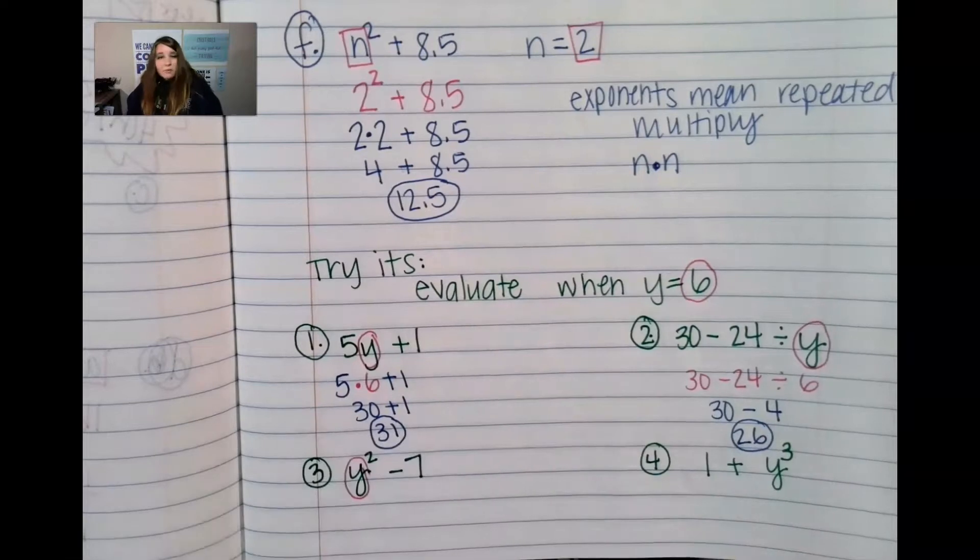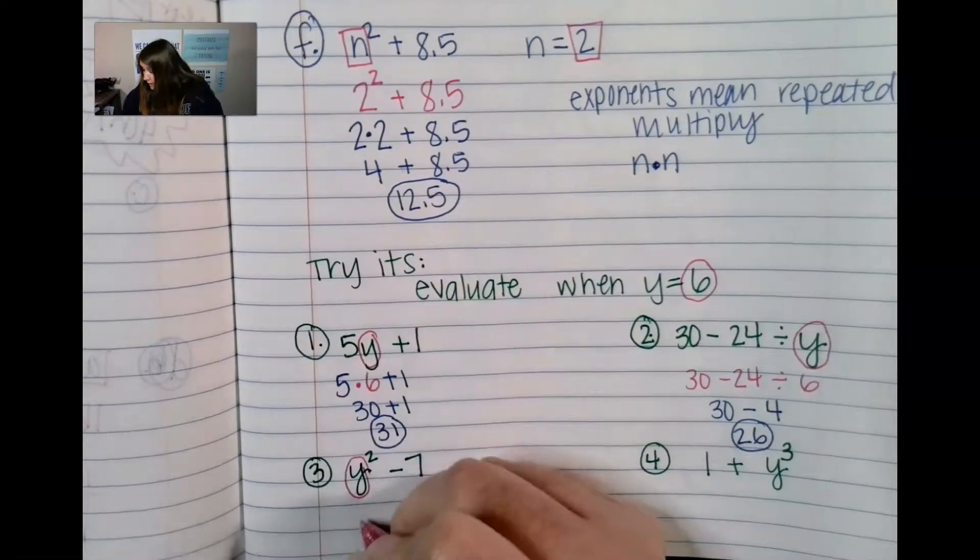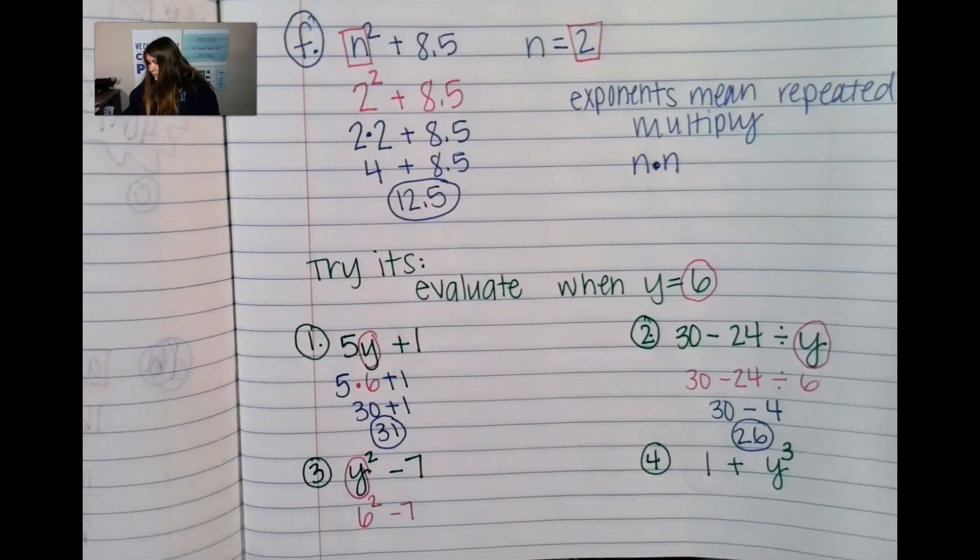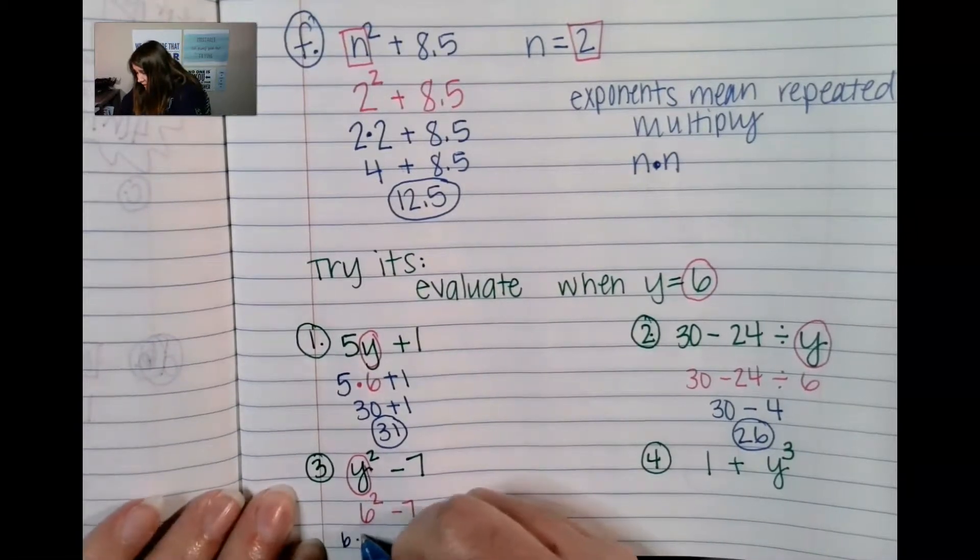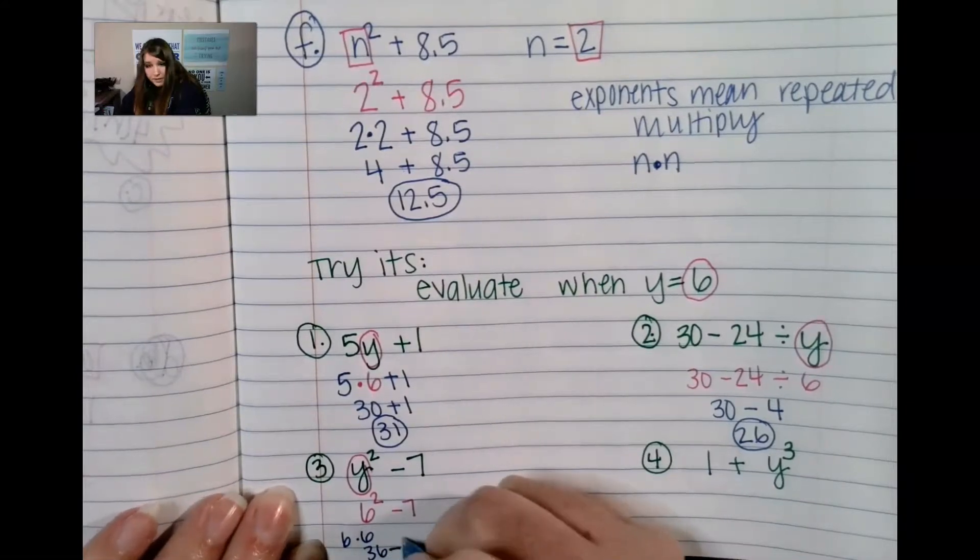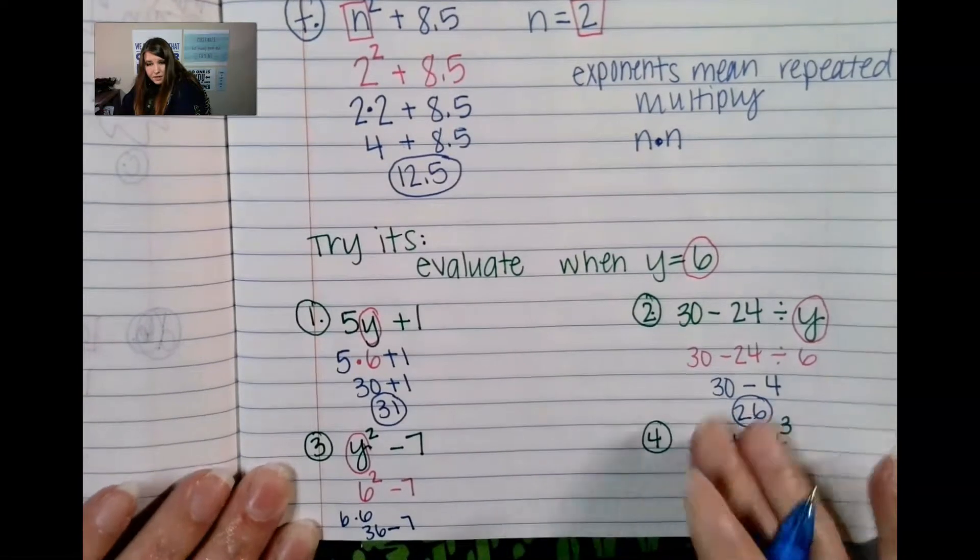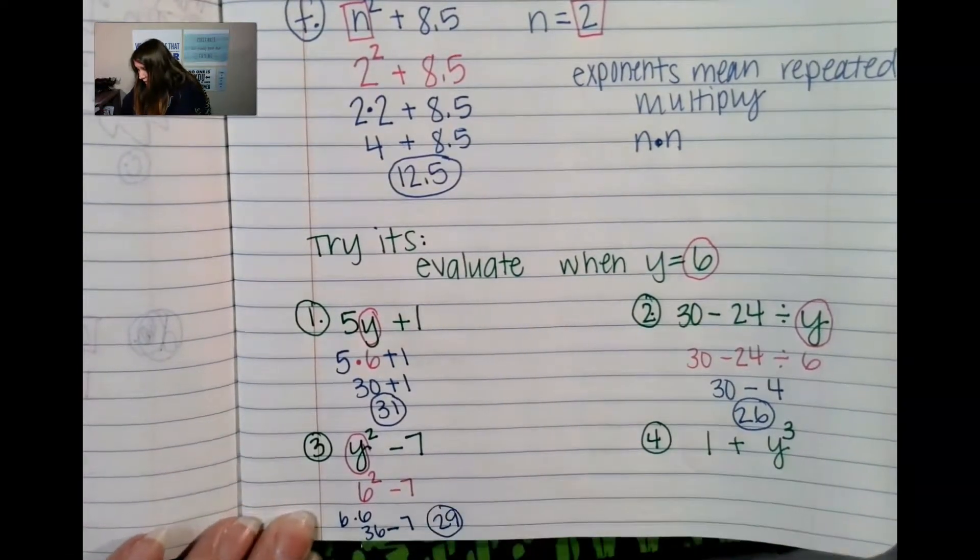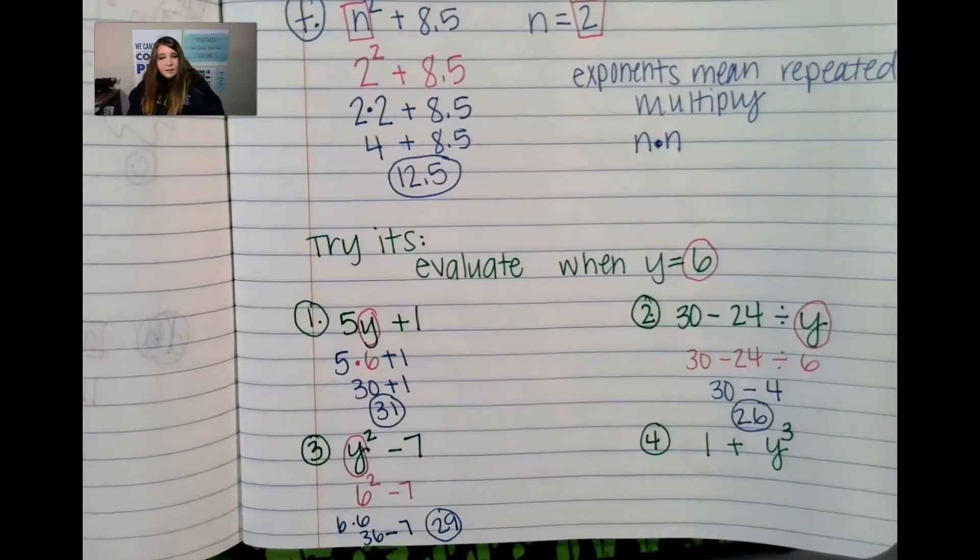And we have six again we have a y, y squared. All right so we have six squared minus seven so six squared is like six times six which is 36 and 36 minus seven gives us 29. How did you do on that one? 29.